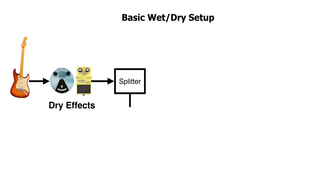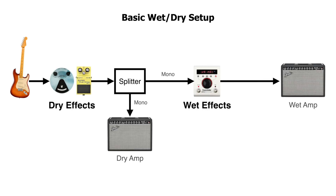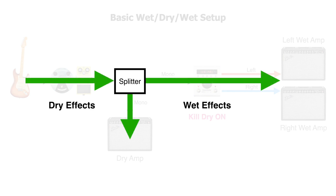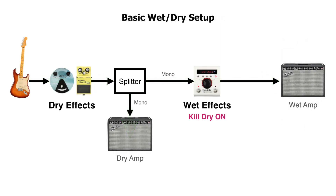The H90 makes it easy to build wet/dry rigs where we have a dedicated amp for the dry signal and another amp dedicated to wet effects. It's crucial that the wet effects have Kill Dry set to on, as the wet amp should not be sent any dry signal. We can take it a step further by adding one more amp to the wet effects section for true stereo in a wet/dry/wet setup. Traditionally these setups require a splitter, but using the H90's insert architecture and internal parallel splitting, we have the tools to achieve such configurations with the added benefit of repositioning effects in the signal chain on a program basis.